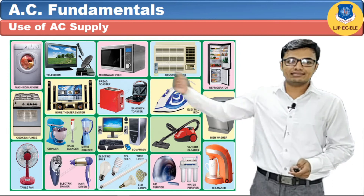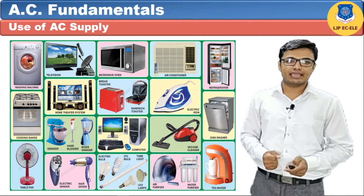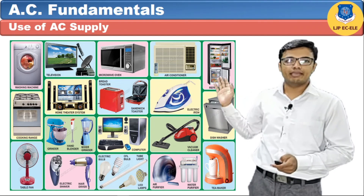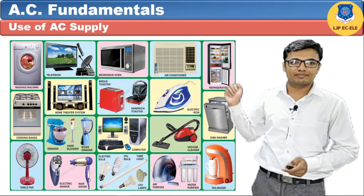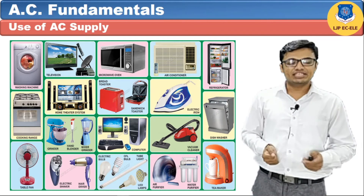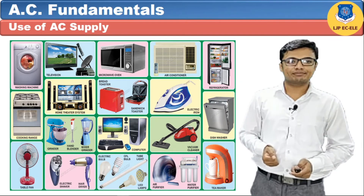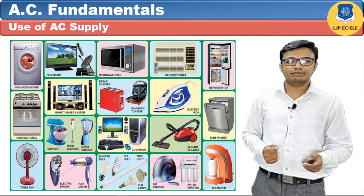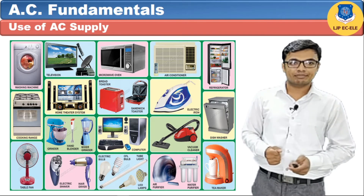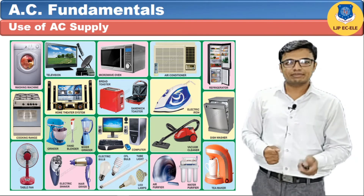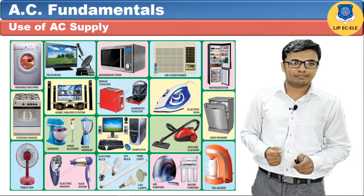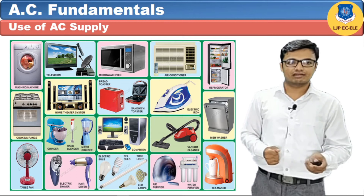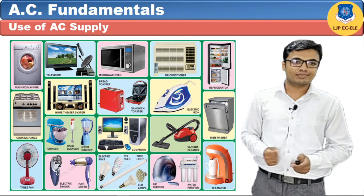Various electronic devices like television, home theater system, air conditioner, and refrigerator may require AC or DC supply. In the air conditioner, the power supply is connected with AC supply and the control supply with DC supply. So we have to use both supplies in these electronic devices.